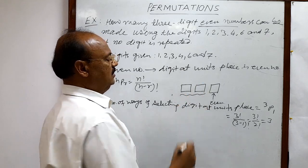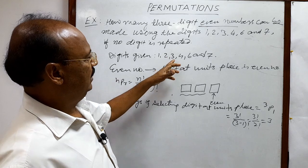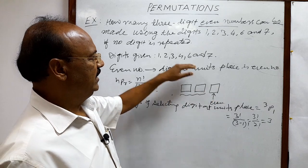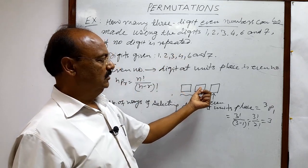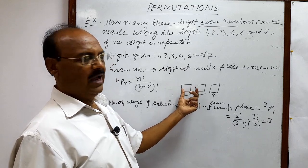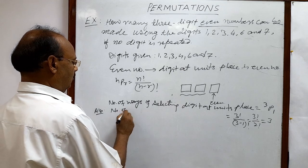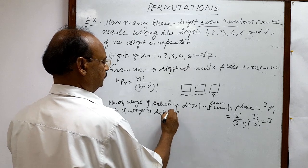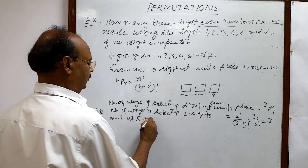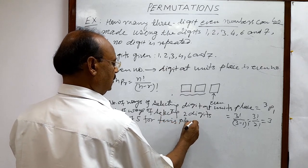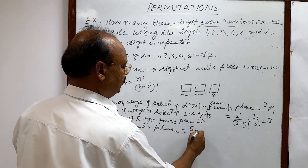And remaining two places here we have and these two places will be filled with the help of how many digits? We have here 6 digits and one digit has been used for this units place. So remaining 5 digits we have and out of these 5 digits we have to select 2 digits for 10th place and 100th place and we have to arrange them. So we have to select 2 out of 5. So number of ways of selecting 2 digits out of 5 for 10th place and 100th place is equal to 5P2.